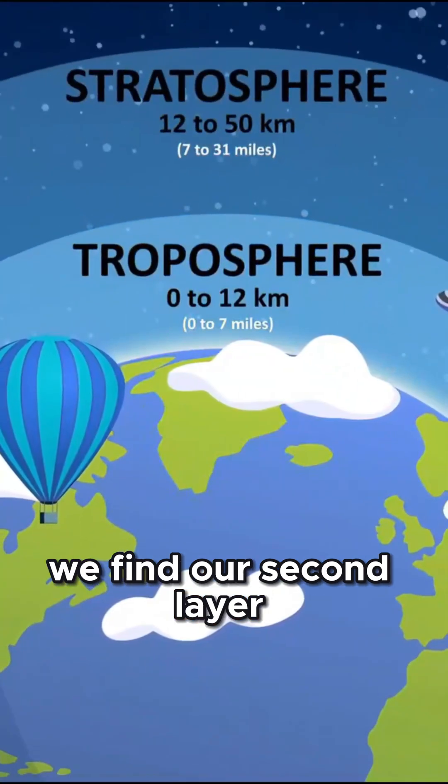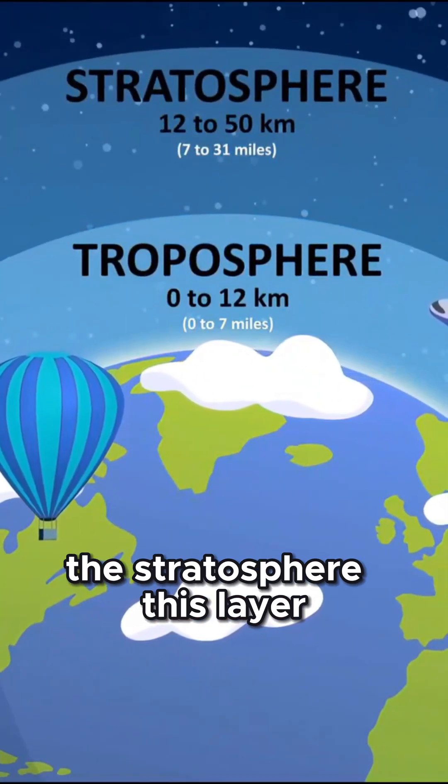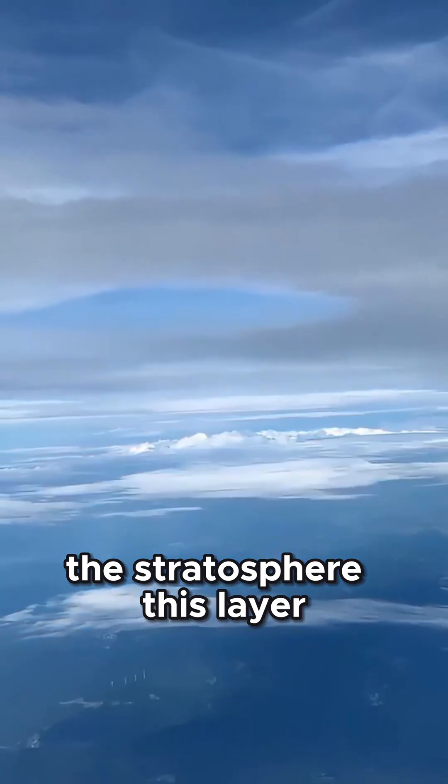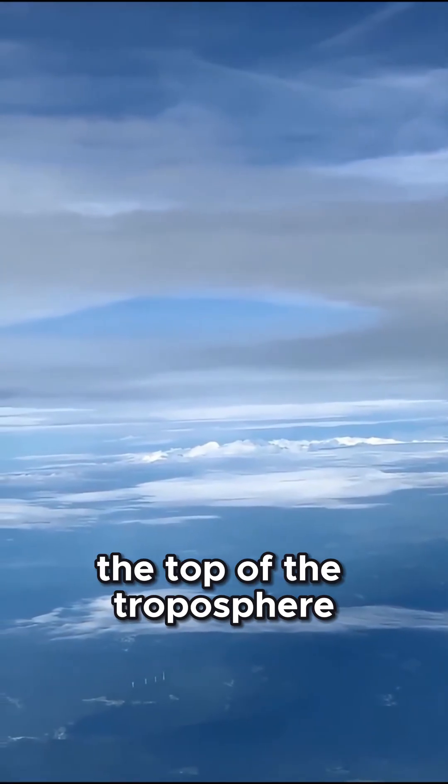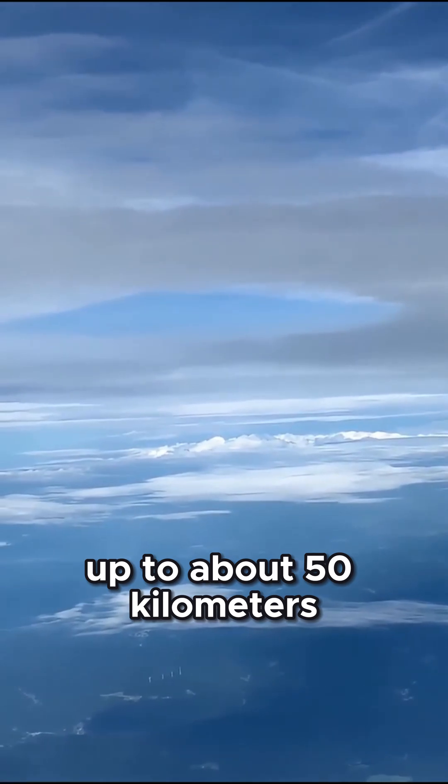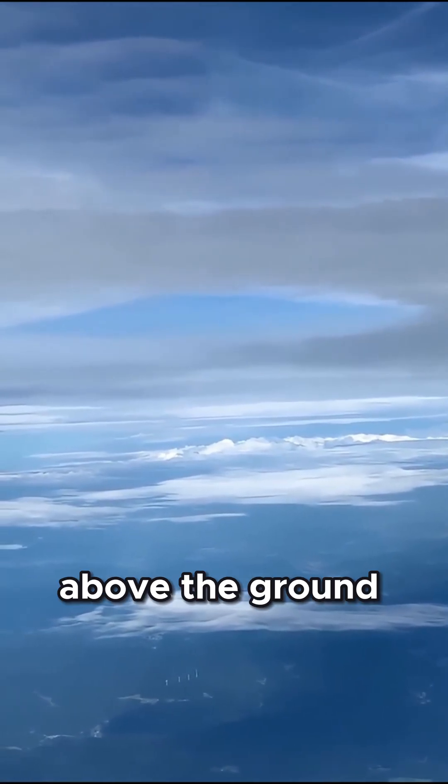Just above the troposphere, we find our second layer: the stratosphere. This layer extends from the top of the troposphere up to about 50 kilometers, or 31 miles, above the ground.